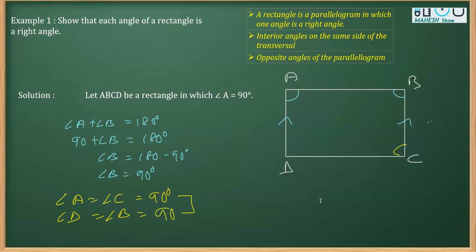So, what we got to know that all the four angles of this figure is 90 degree, that is angle A, angle B, angle C and angle D. They are all equal to each other and they are 90 degree. So, we proved that each angle of a rectangle is a right angle.